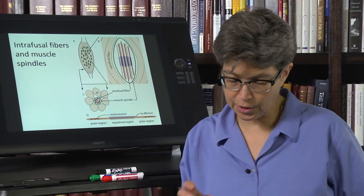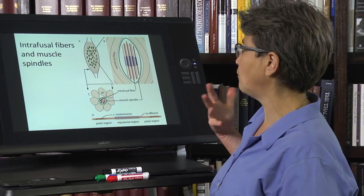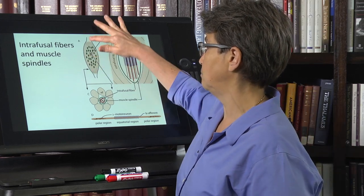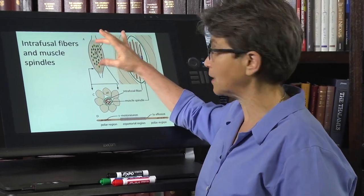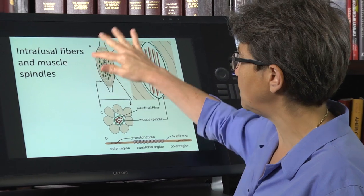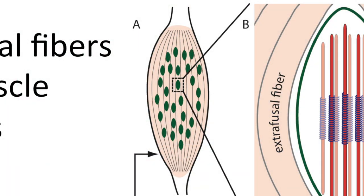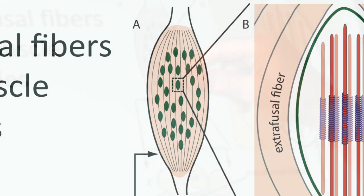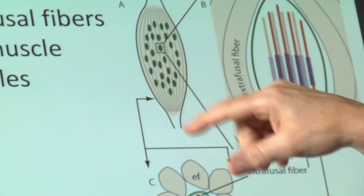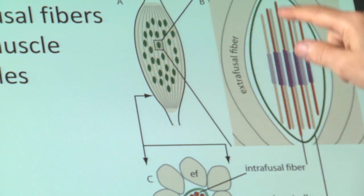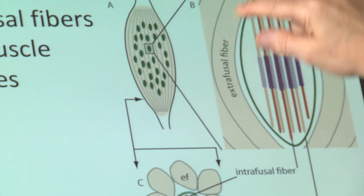To understand this, we need a little bit of vocabulary. When we think of a muscle, we think of the muscle fibers that contract. But if we zoom in here, what you see is that interspersed within these contractile fibers are a series of capsules. And these capsules are called muscle spindles.